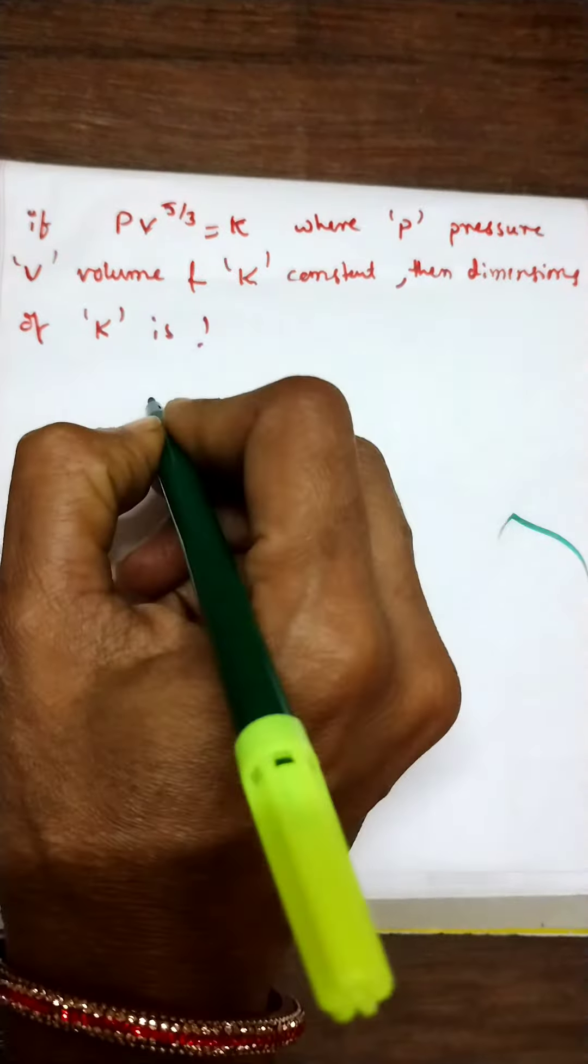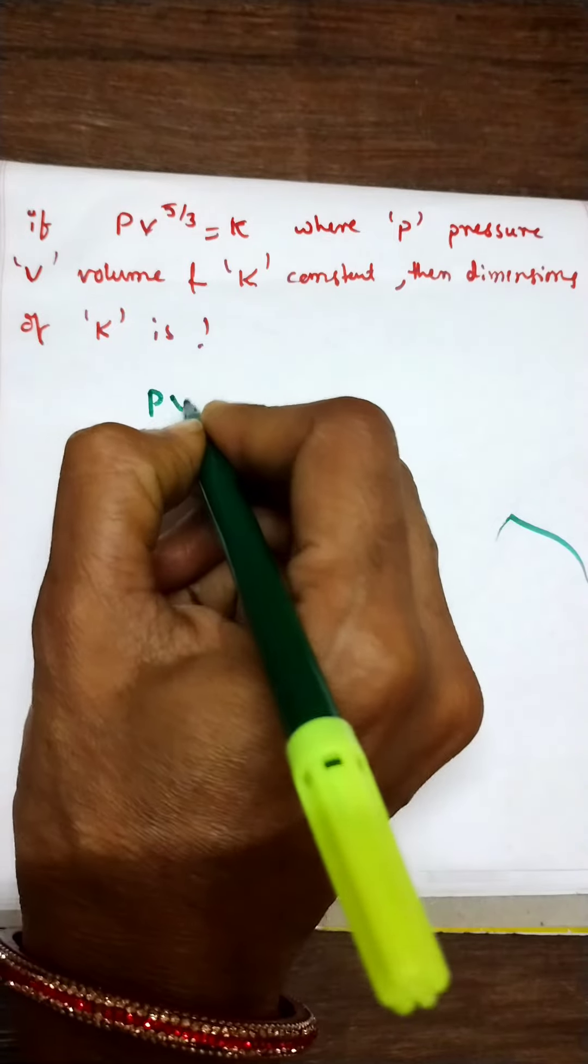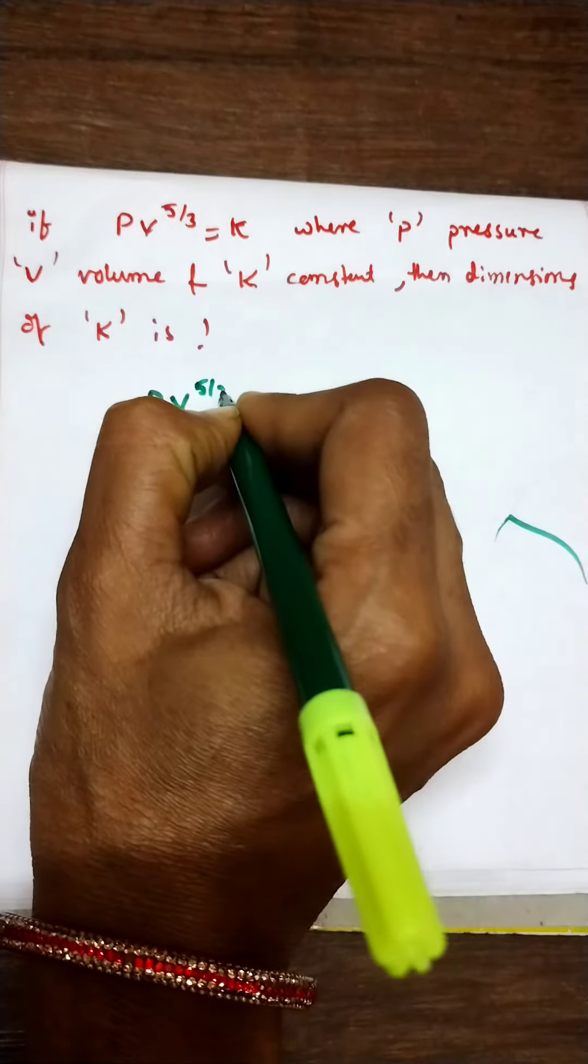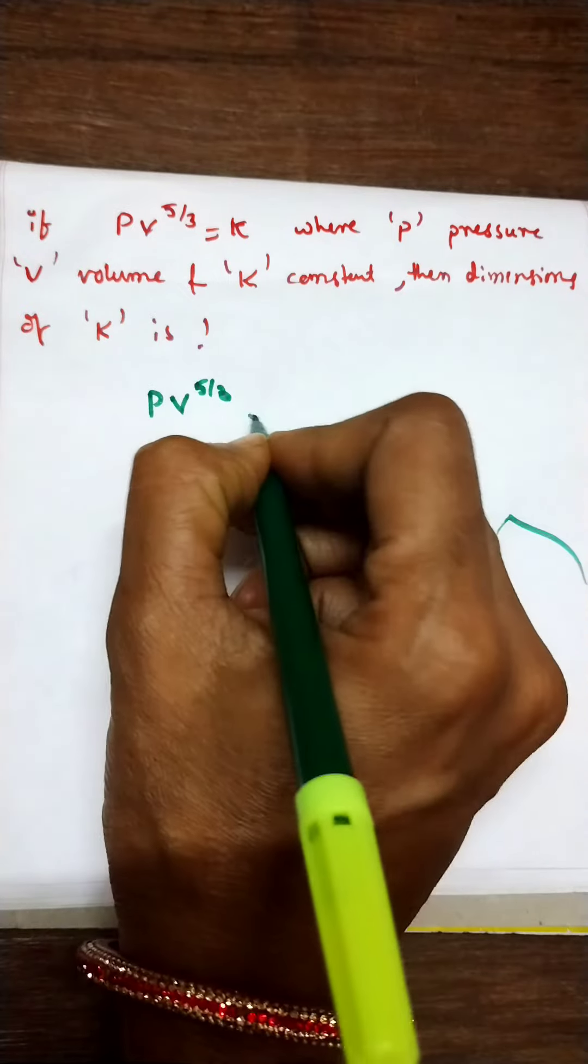So what is the equation they have given? P V to the power of 5 by 3 equals K.